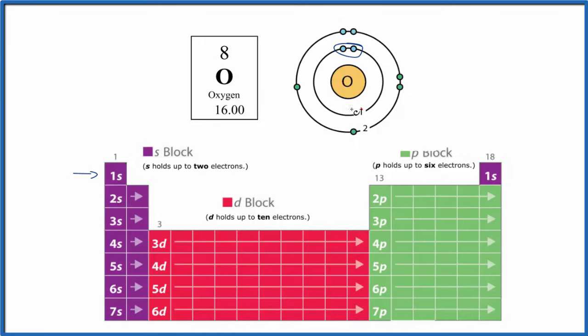So we have our first energy level here with 2 electrons. But that's full now. After that, we go to the second energy level. That can hold 1, 2, 3, 4, 5, 6, 7, 8 electrons.